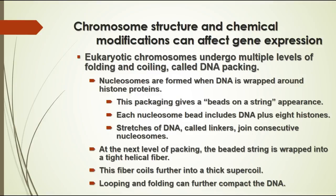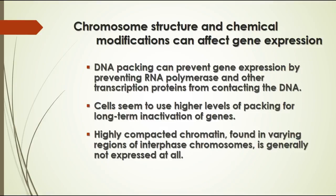Eukaryotic chromosomes have many levels of folding and coiling, called DNA packing. With about a meter of DNA in each of your six trillion cells, there's a lot of packing needed to fit the DNA into the nucleus. The DNA wraps around proteins called histones forming nucleosomes, which look like beads on a string. Each nucleosome contains DNA and histone molecules, and the beaded string gets wrapped into a tight fiber which then coils into a thick super coil, compacting the DNA greatly.